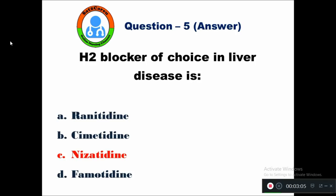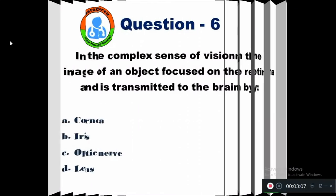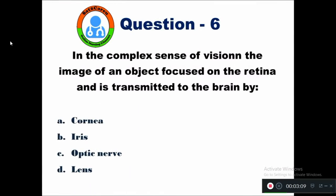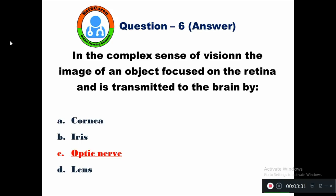Question 6: In the complex sense of vision, the image of an object focused on the retina is transmitted to the brain by — option A cornea, B iris, C optic nerve, D lens. The right answer is the optic nerve, which is responsible for transmitting the image from the retina to the brain.